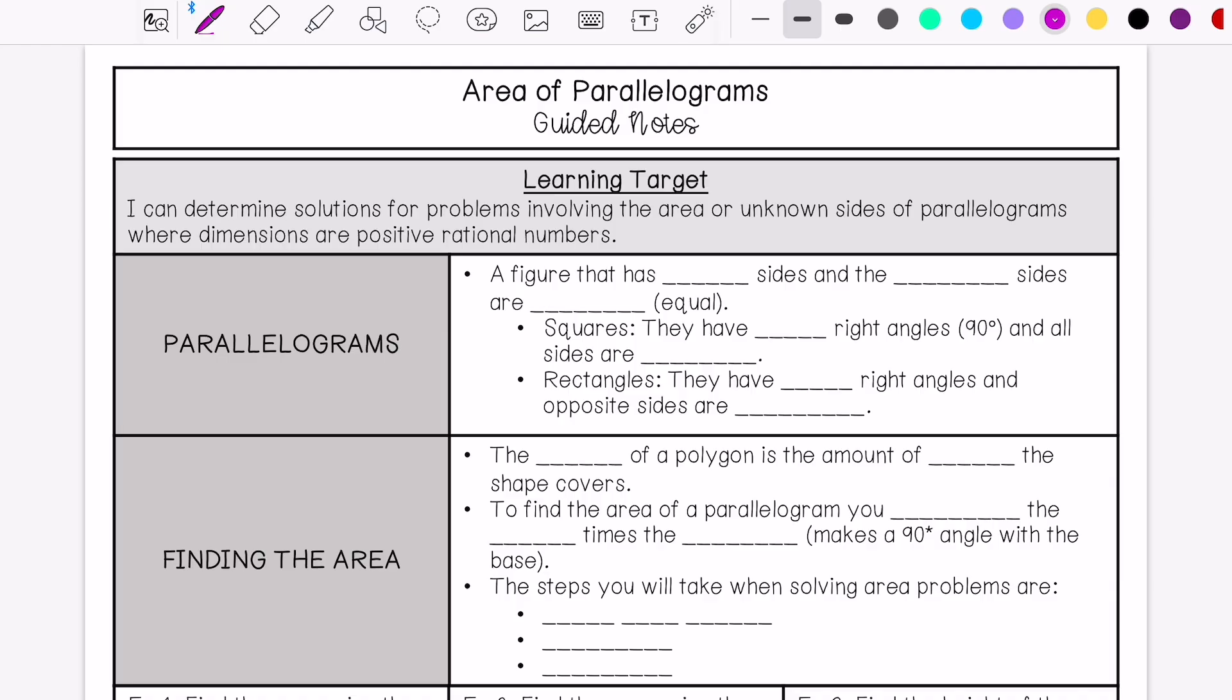So a parallelogram is a figure that has four sides, and the opposite sides are congruent or equal.